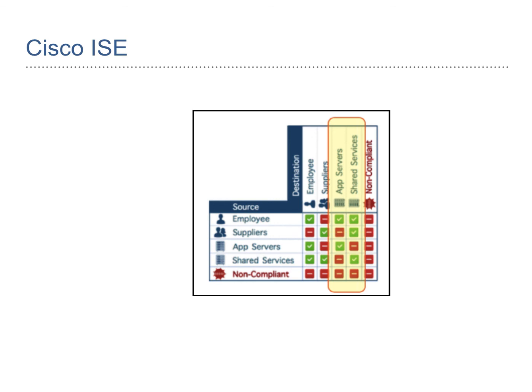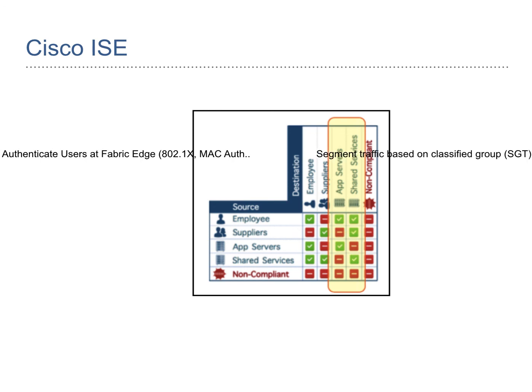ISE authenticates users at the edge level via MAC authentication, 802.1X, or other means, and helps segregate traffic based on SGTs — Security Group Tags. The power of this is mobility: regardless of the user's location, the tags are associated with the user. The user will always be tagged with that particular policy whether connected to one switch or another — the policy always flows along with the user. That is the beauty of this architecture.